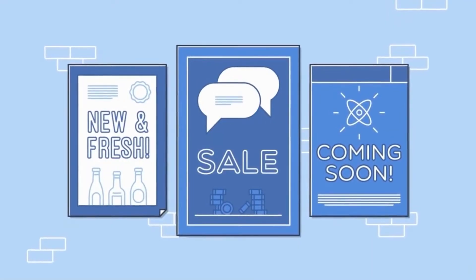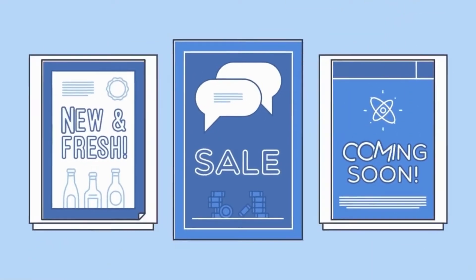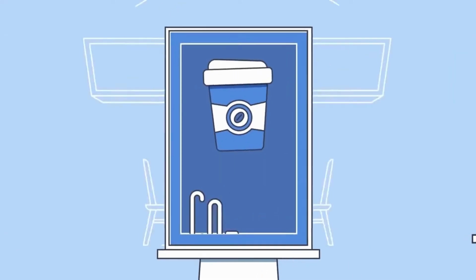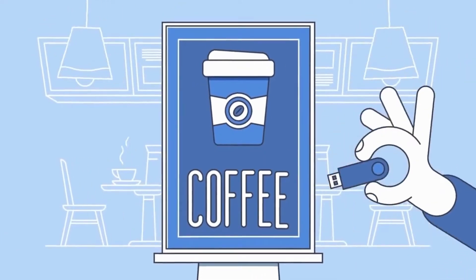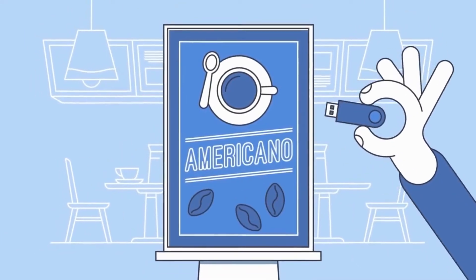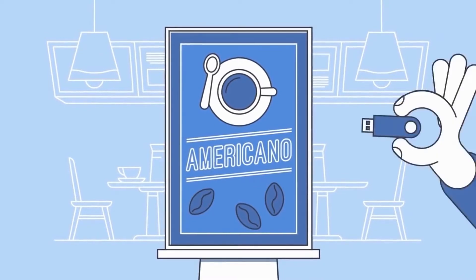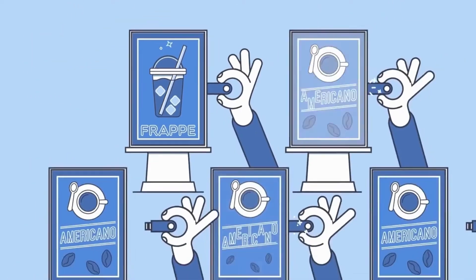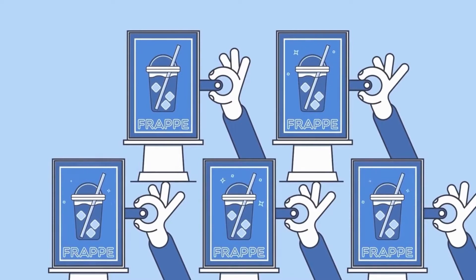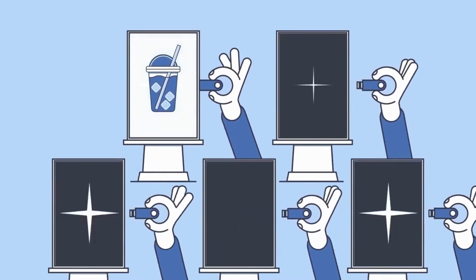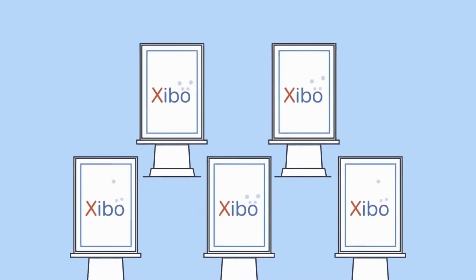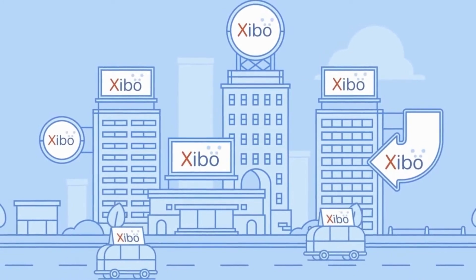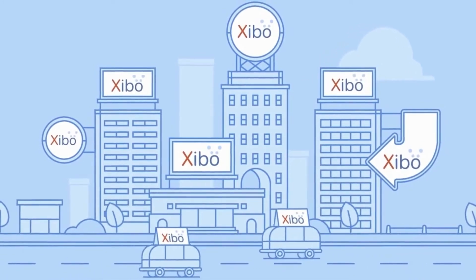Digital signage is the best way to get engaging content to the right audience at the right time. But even if you only have one screen, manually loading your content takes a long time and isn't very flexible. The more screens you have, the worse it gets. Problem solved when you use Zeebo! Zeebo offers many powerful features to help you bring your digital sign to life.